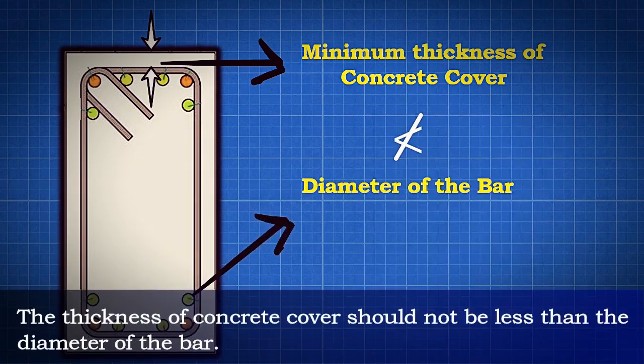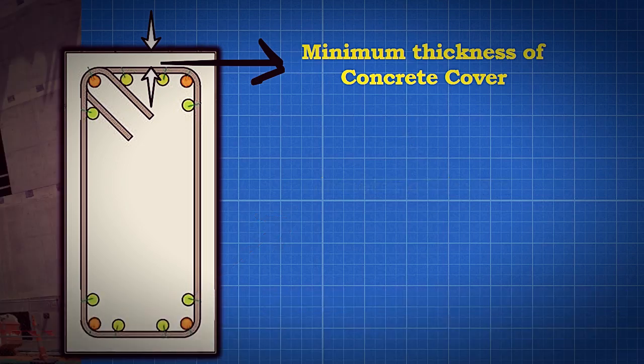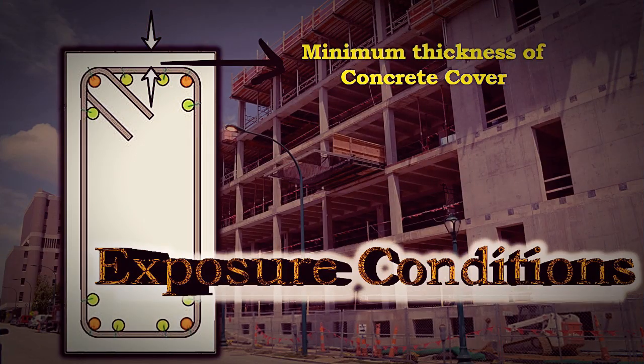The thickness of concrete cover should not be less than the diameter of the bar. The minimum thickness of concrete cover for normal weight aggregate concrete is provided in accordance with exposure conditions.